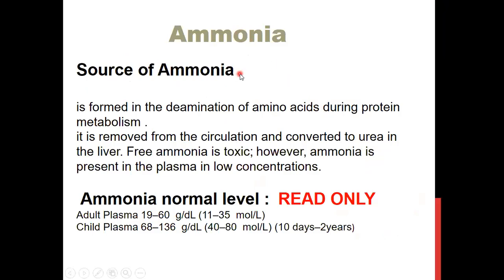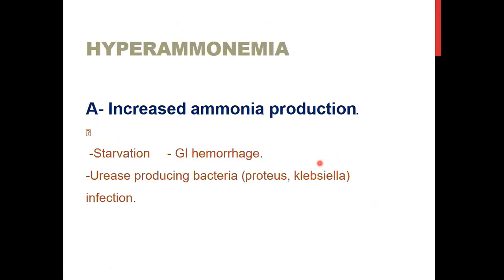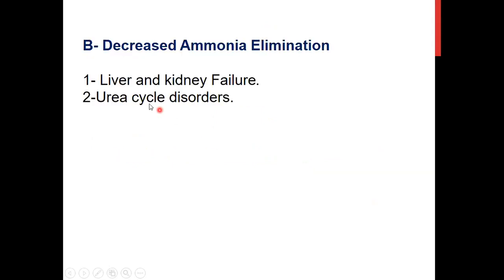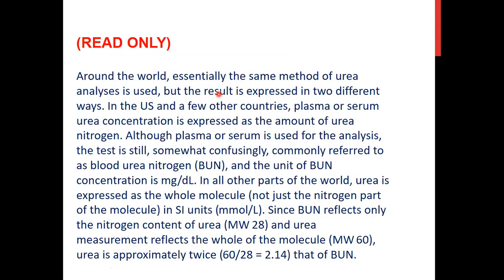Ammonia is another NPN of blood. Its source is deamination of amino acids during protein metabolism. Ammonia is removed from circulation and converted to urea in the liver. Free ammonia is toxic and can cause hepatic encephalopathy or coma because it is very toxic to the CNS. That is why ammonia must be detoxified in the liver and converted to urea. Normally the plasma contains very low concentrations of ammonia. Hyperammonemia occurs with severe GIT hemorrhage, starvation, and liver and kidney failure.